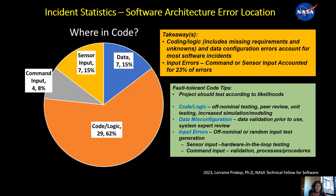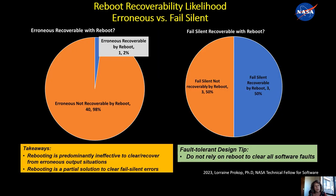Data and config accounted for 15%. If you look at inputs — command and sensor together — that's 23%. Another interesting finding: if you just try to reboot the computer to recover, in the erroneous output case the answer is no — 98% of cases are unrecoverable by reboot; only one out of the 41 erroneous cases could have been recovered by a reboot. And even in the fail silent cases, only half were recoverable by reboot. So rebooting is really ineffective.